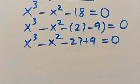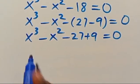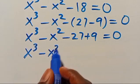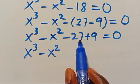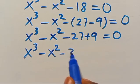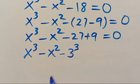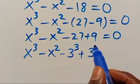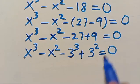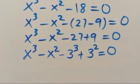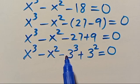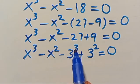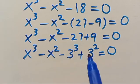So from here, let's have x to the power of 3 minus x squared. Let's write 27 in base 3 as minus 3 to the power of 3, which gives us 27. Plus, let's write 9 in base 3 as 3 to the power of 2, which gives us 9. Everything equals zero. Then let's group this expression — terms with power of 3 together, and terms with power of 2 together.